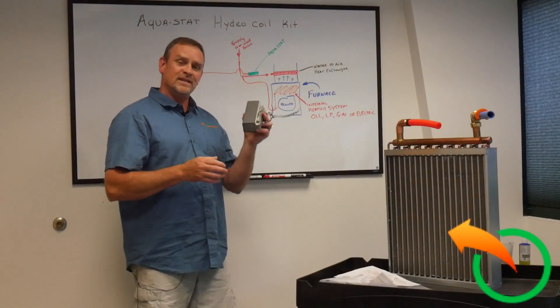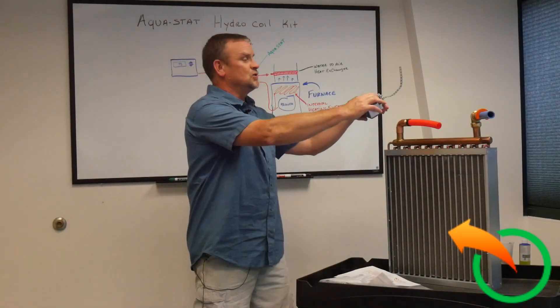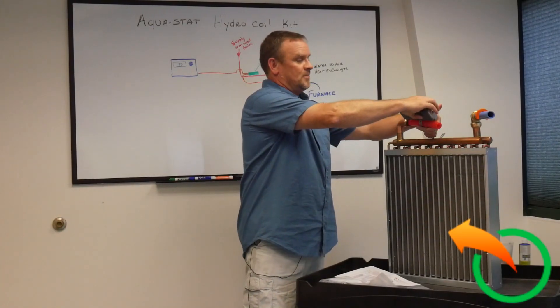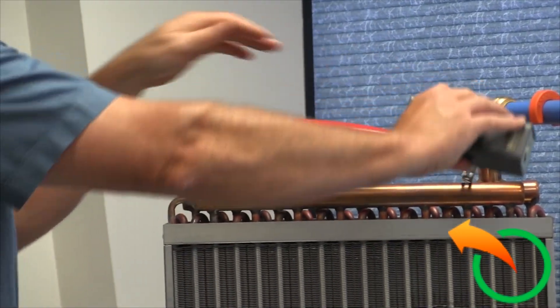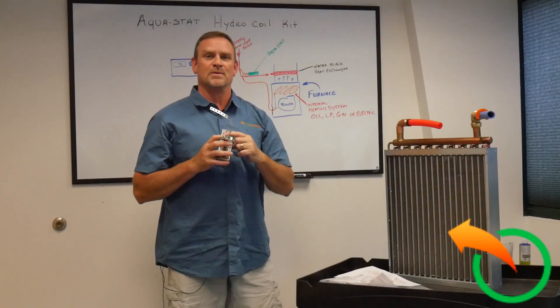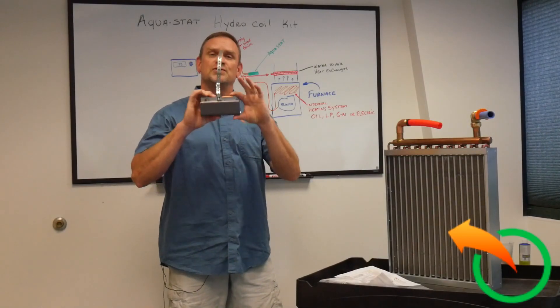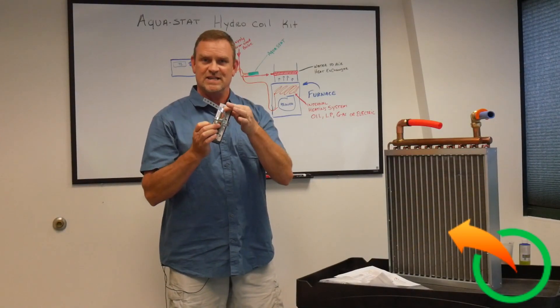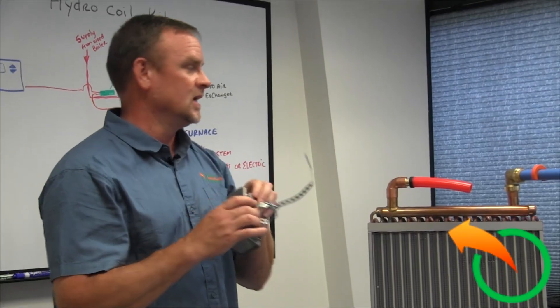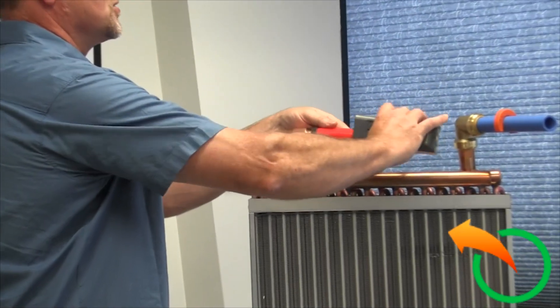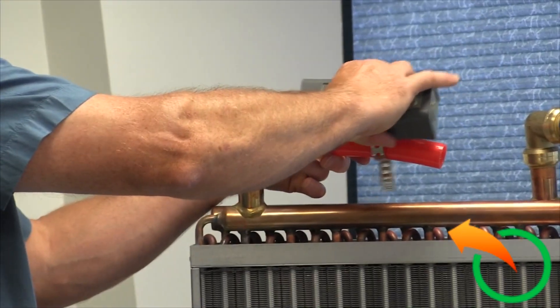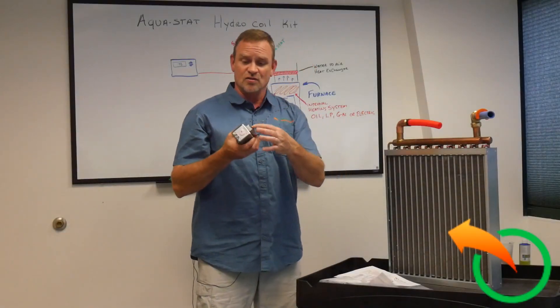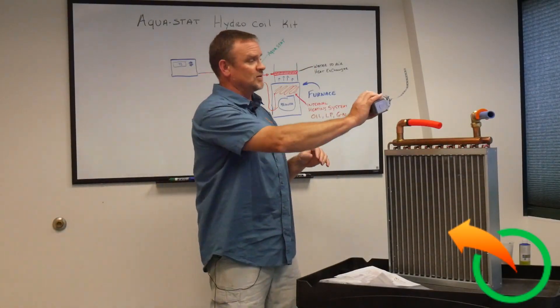So what this is is a strap on Aquastat that straps on to the PEX pipe line and the probe that monitors the temperature of the water is in this little area in this little piece of insulation and what that does is it monitors the temperature of the water inside the pipe instead of inside a thermal well. So this just mounts on a PEX pipe.